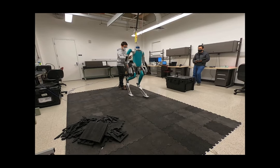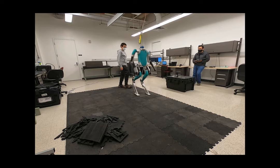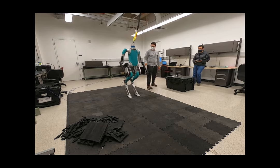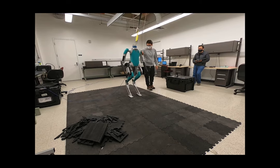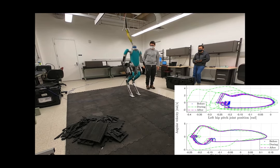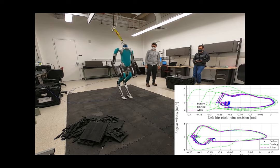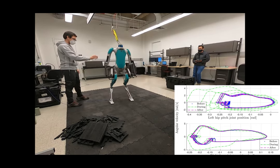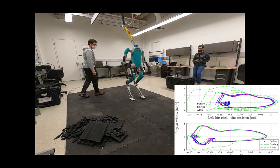Experimental results on Digit show that the policy is robust against external disturbances applied to the robot in different directions, even though the policy is trained without disturbances. The limit cycle of the robot's joints shows that the policy is able to recover effectively from the push, as the joint limit cycle returns to a stable periodic orbit after the disturbance.